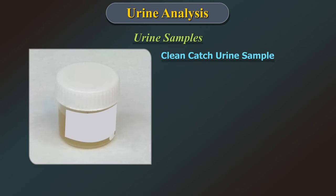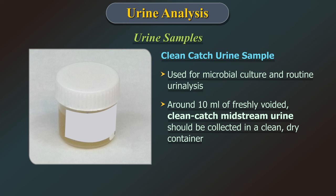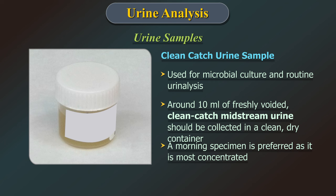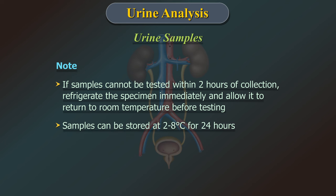The clean catch urine sample is used for microbiological culture and routine analysis. Around 10 ml of freshly voided clean catch midstream urine should be collected in a clean, wide-mouth, dry container. A morning specimen is preferred as it is most concentrated. If samples cannot be tested within 2 hours of collection, refrigerate the specimen immediately and allow it to return to room temperature before testing. Samples can be stored at 2 to 8 degrees centigrade for 24 hours.